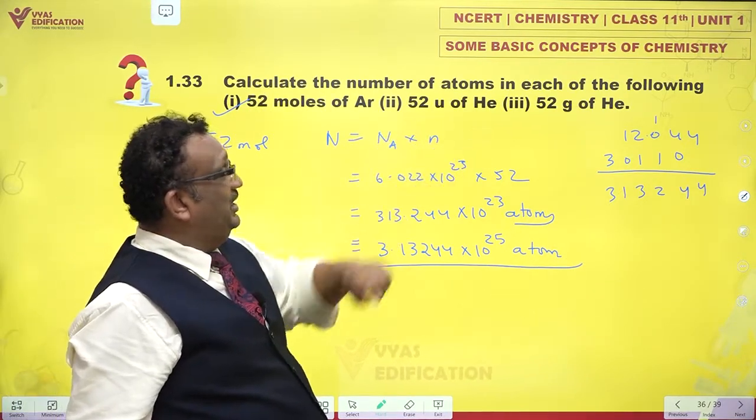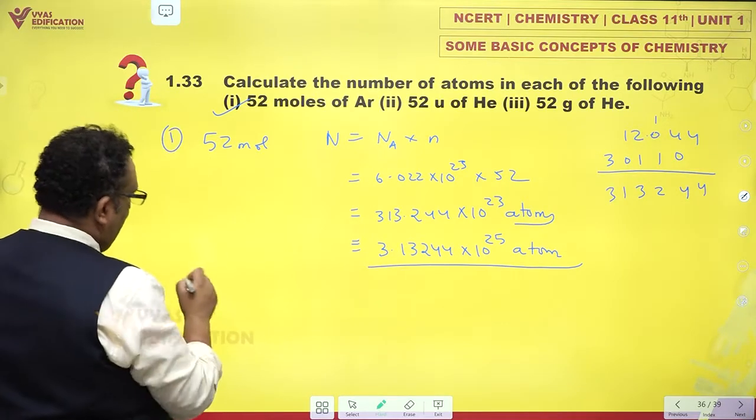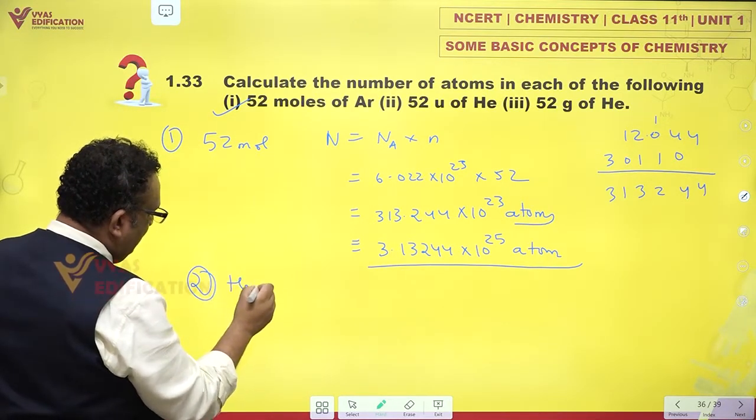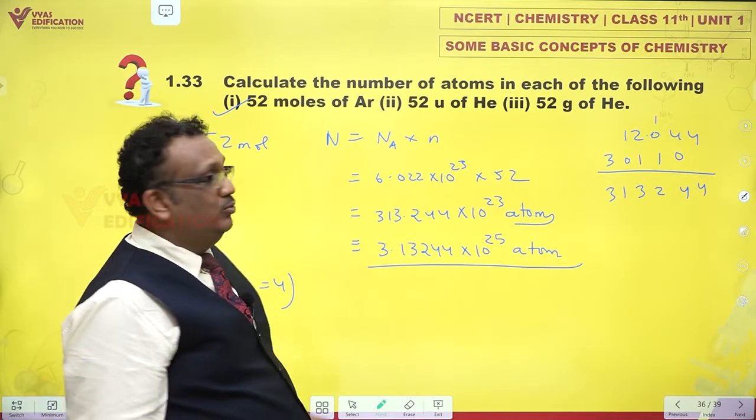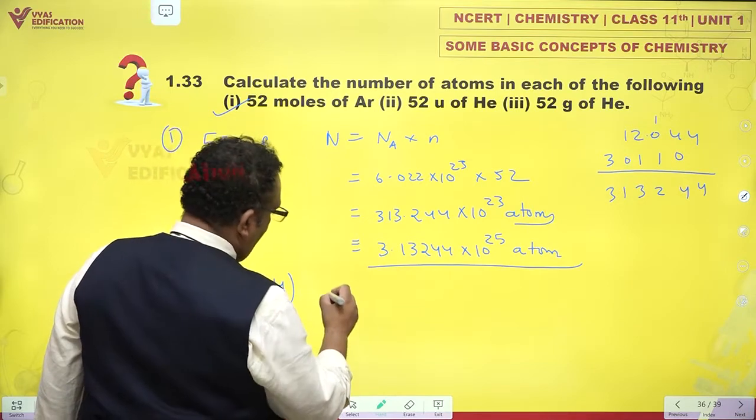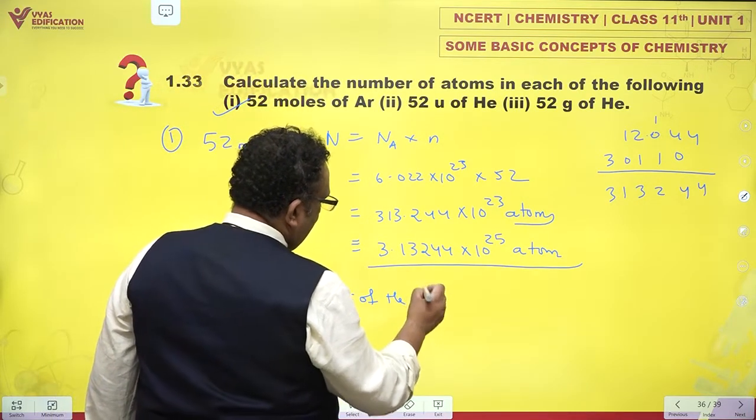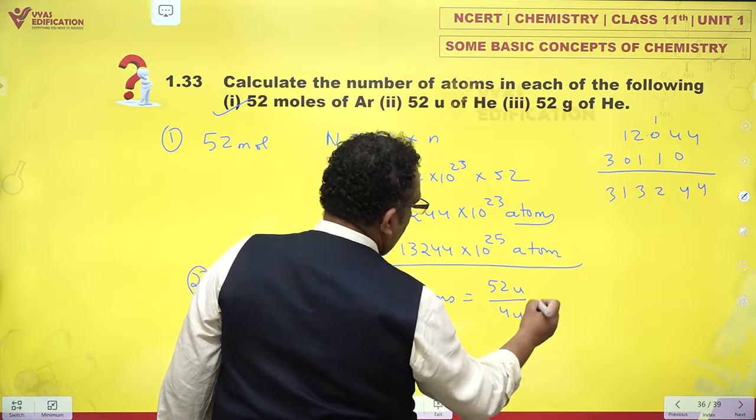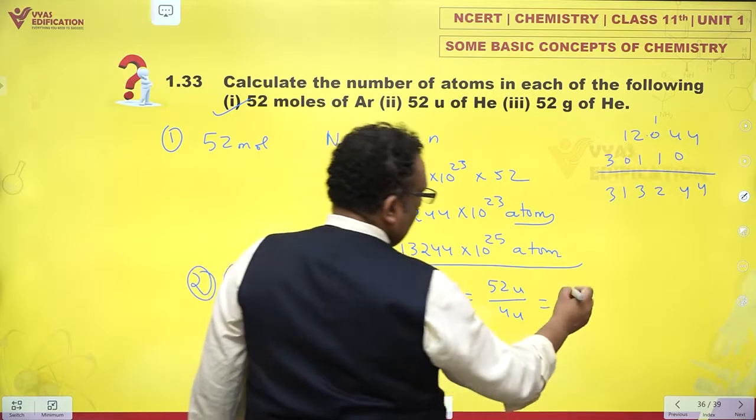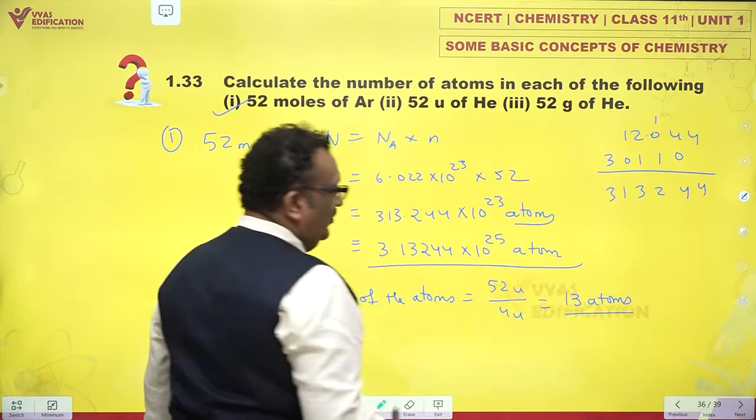52 amu of helium. Now helium atomic mass is 4, so 4 amu. So the number of helium atoms is 52 u by 4 u which is 13. Helium has only 13 atoms, yes that's how it is.